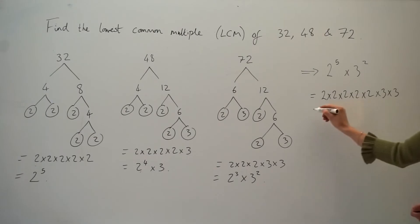Okay, so I'm going to work out these multiplications here first. So 2 times 2 is 4, 4 times 2 is 8, 8 times 2 is 16, and 16 times 2 is 32. 3 times 3 is 9.